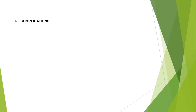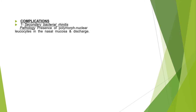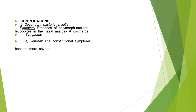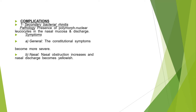Complications of common cold: a secondary bacterial rhinitis can occur. With bacterial rhinitis, the constitutional symptoms become more severe — the fever, headache, malaise, and anorexia. The nasal symptoms will be more aggressive, with more obstruction, and the discharge changes from whitish to yellowish.